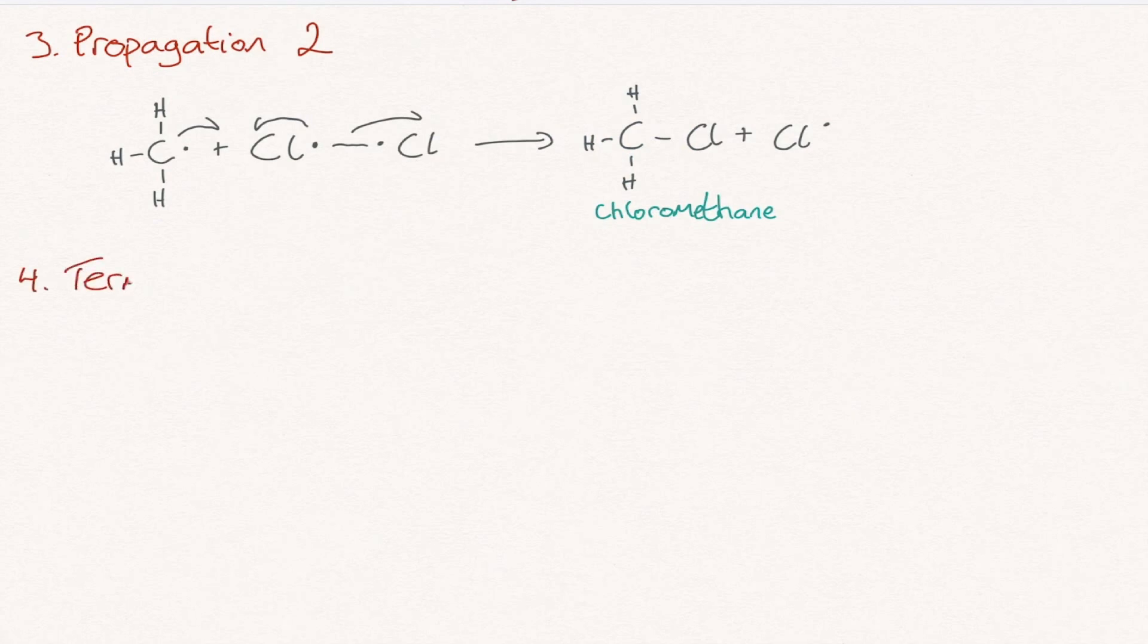Step 4, Termination. A number of reactions occur to stop the chain reaction, all of which involve free radicals combining with one another to form molecules. This stage causes the reaction to end, hence the name termination.